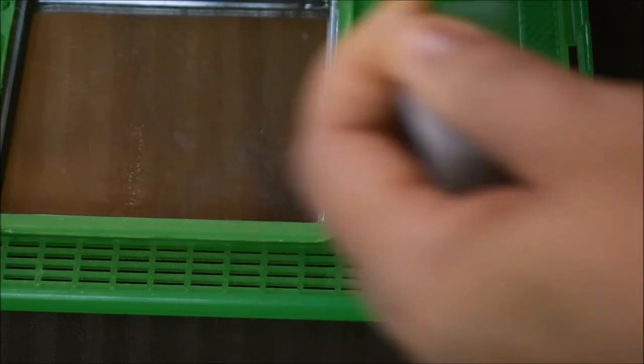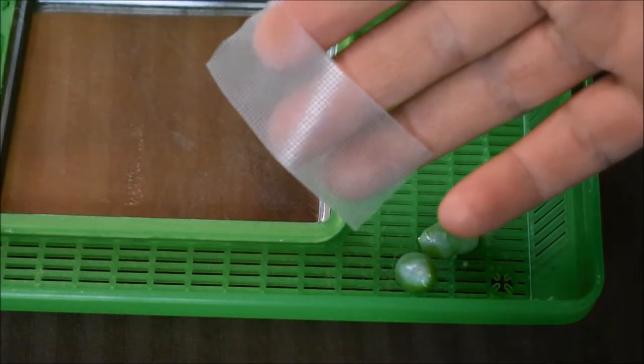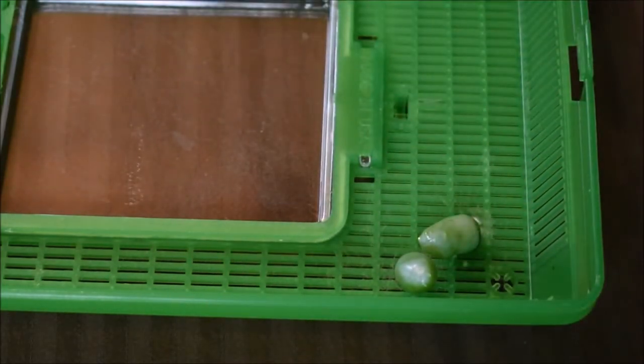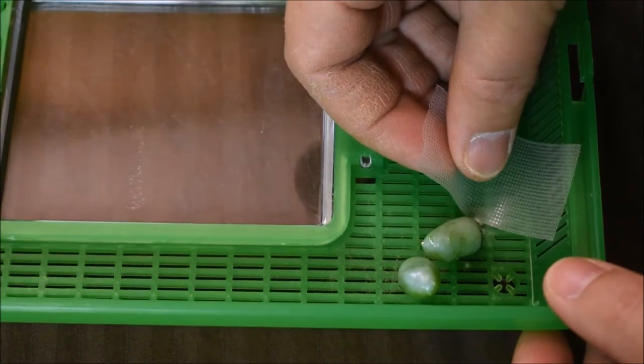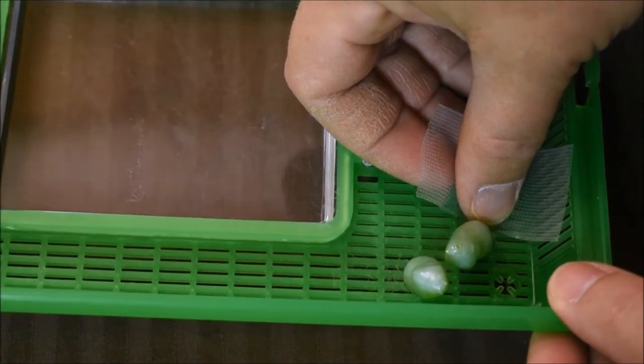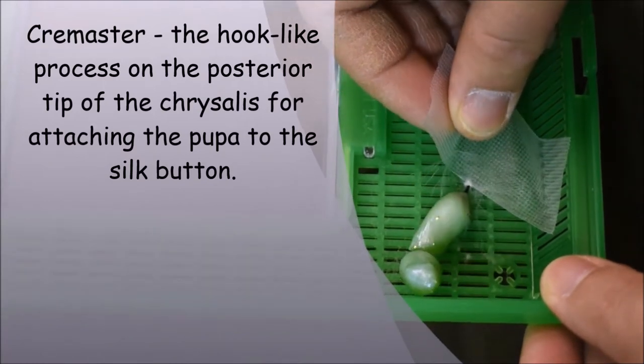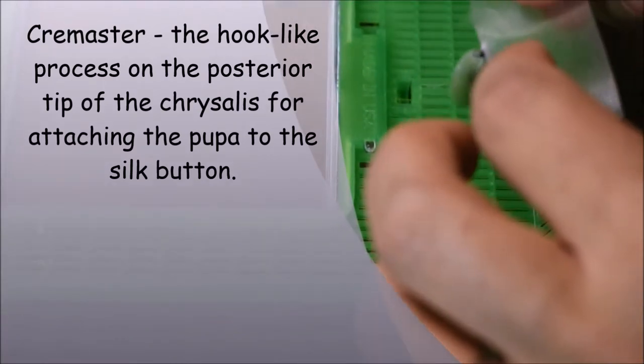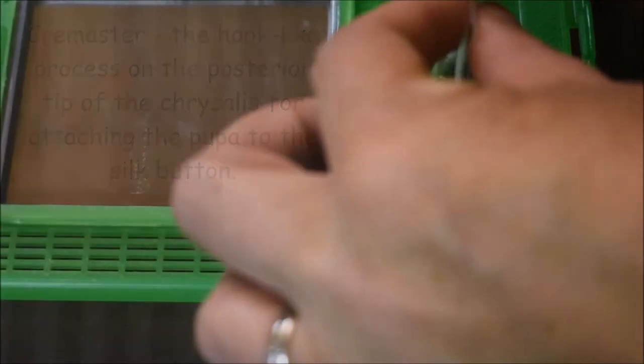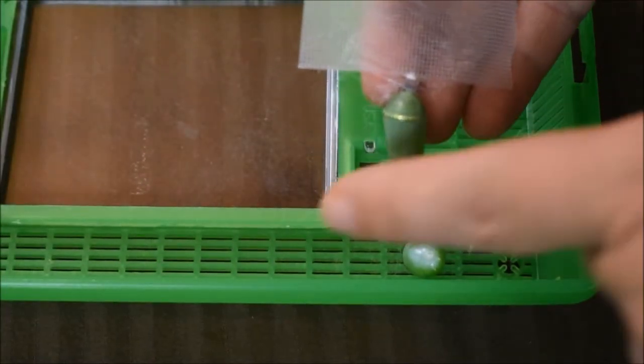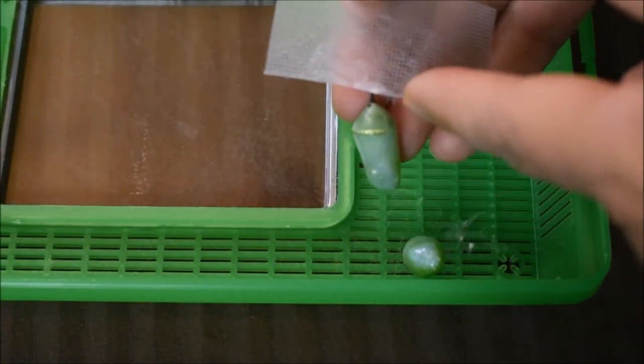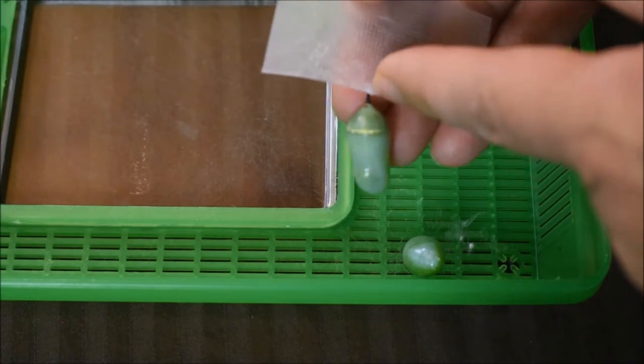Then I just put it right above the cremaster. You don't tape that and pull. You have this silk on the other side, and I just make sure to kind of fold it up out of the way of the chrysalis, just so the butterfly doesn't have a chance to get tangled up in the silk.